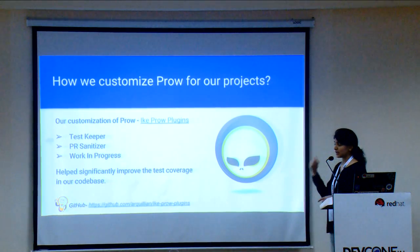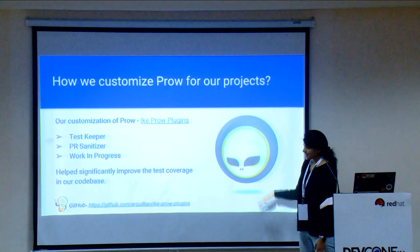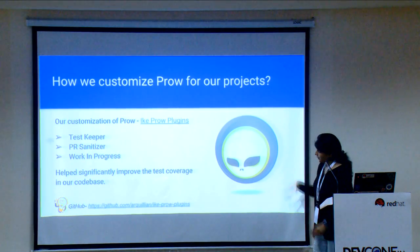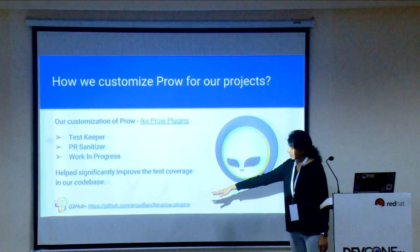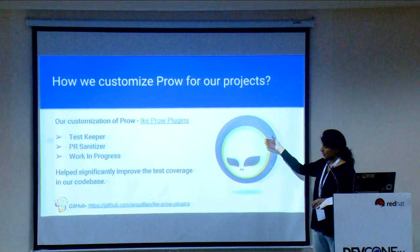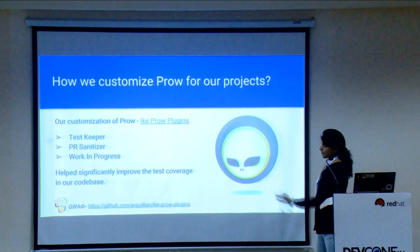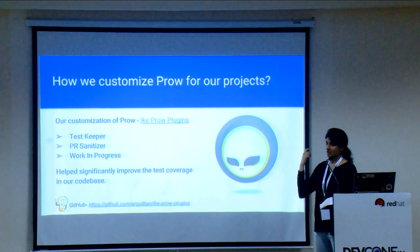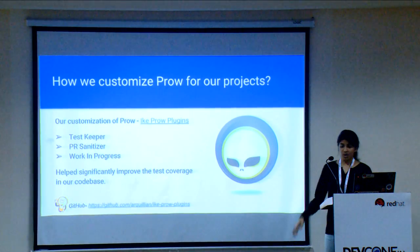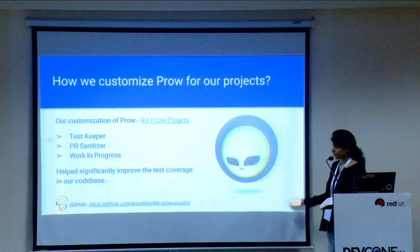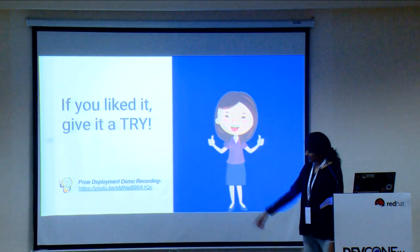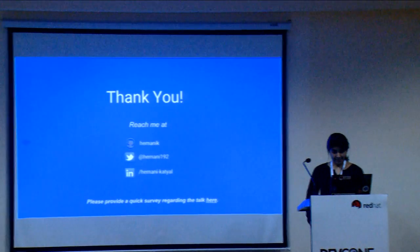Another PR Sanitizer rule is that the PR should have a link to the related issue so the issue can be automatically closed once the PR is merged. Work in Progress is an enhanced version of the standard WIP plugin. These checks have significantly improved and enforced test coverage. If you want to check this out, it is on GitHub as an open source project called eProw Plugin. You can send a PR request to add your repository, or you can directly use Kubernetes Prow for your use case.